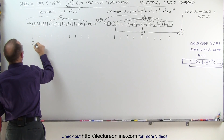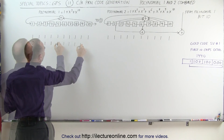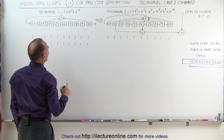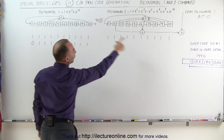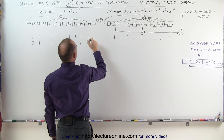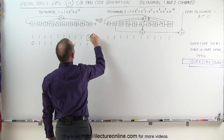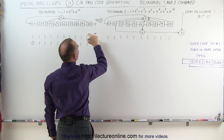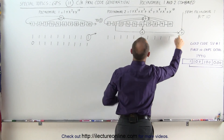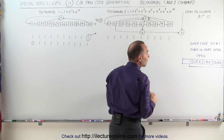This then becomes 0, 1, 1, 1, 1, and 1. What gets fed over here? It's the output of 10, which is a 1, so this 1 will go over to polynomial 2 to get summed with the output of bits 2 and 6.